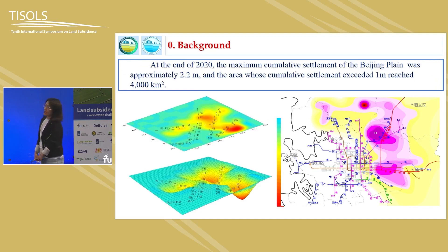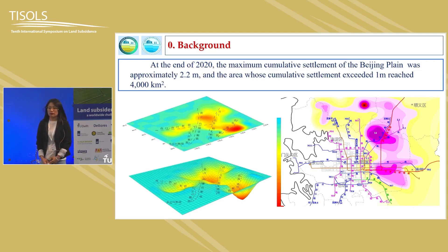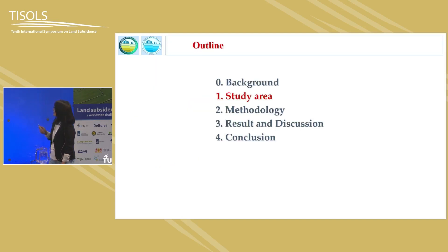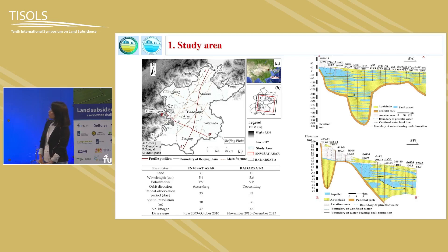At the end of the 2020s, the maximum cumulative subsidence has reached 2.2 meters, with maximum subsidence rates of about 159.5 millimeters per year. The study area is the Beijing Plain. As we know, Beijing is located in the northwestern part of the North China Plain.